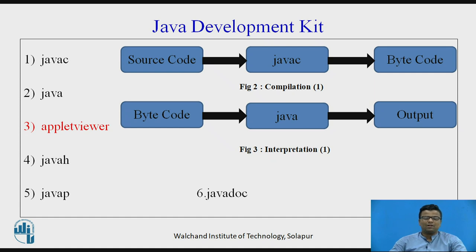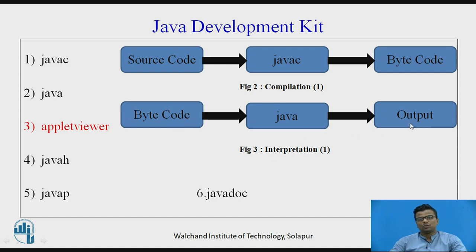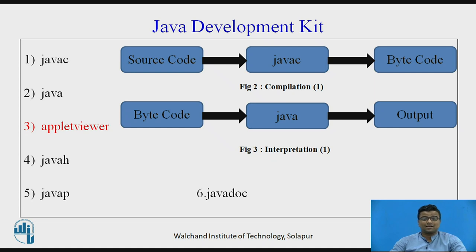Java Development Kit, Java Runtime Environment, and Java Virtual Machine — these three are very important in Java programming. The Java compiler converts source code into byte code using JavaC. The Java interpreter converts byte code into output. Applet viewer is an important Java Development Kit file; if we want to operate applet programs, the applet viewer provides the output. JavaH is used to develop header files in Java programming, because header files are absent in Java programming.